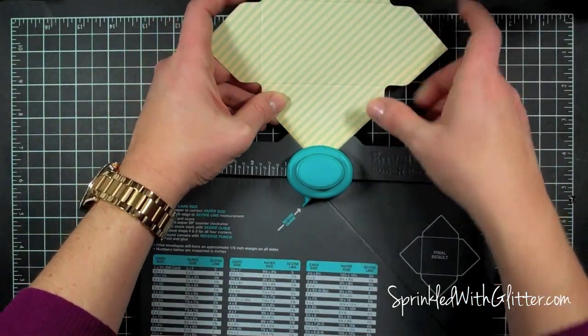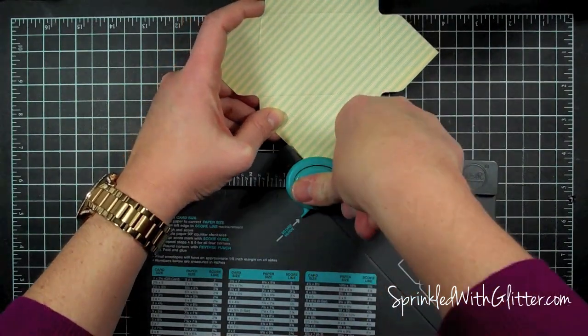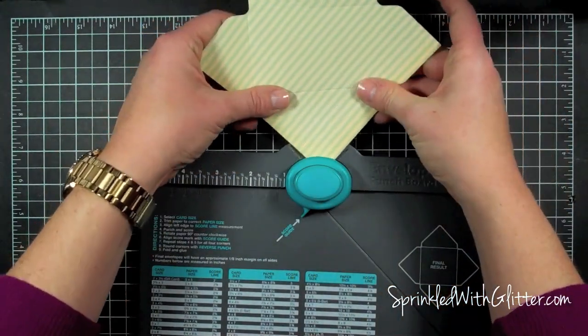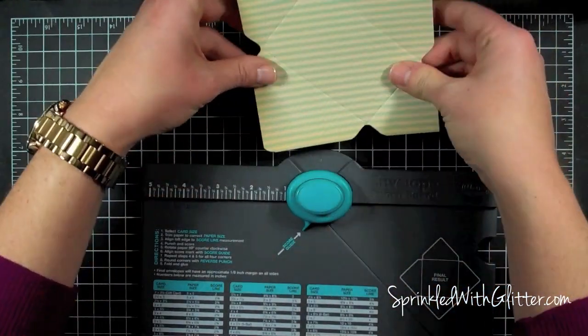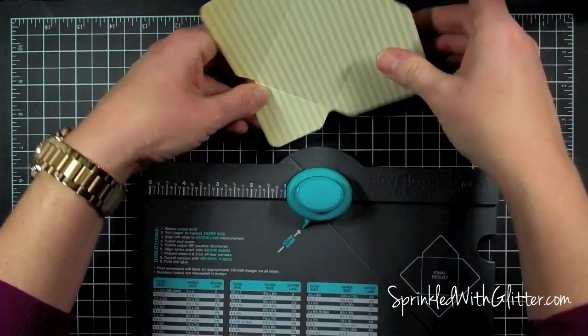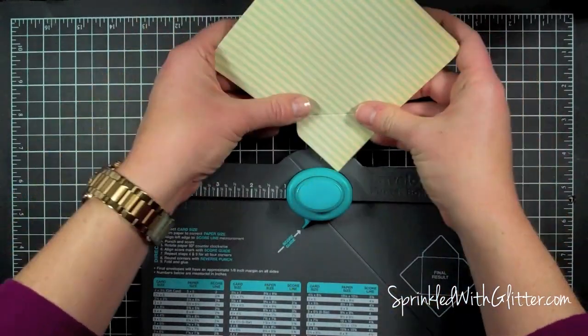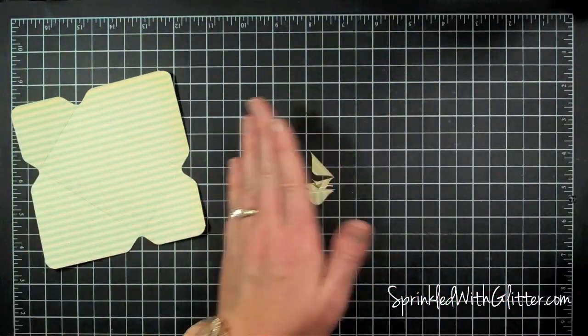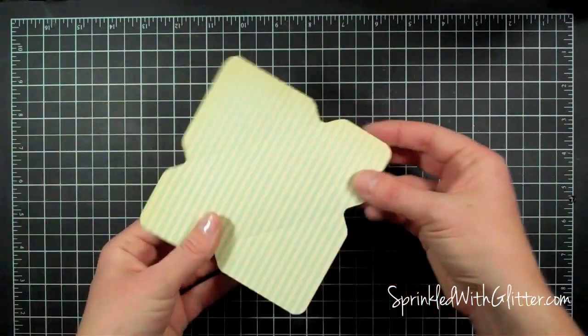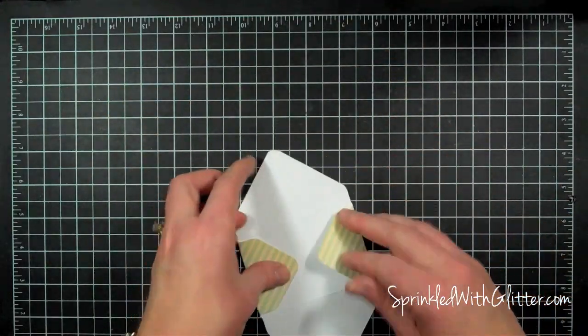And I can just take this now and put it in the opposite side of the punch and punch to round all of these corners. And just as simple as that, I have my envelope ready to put together.